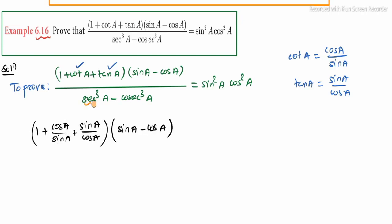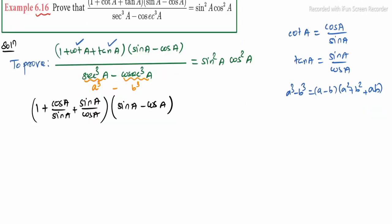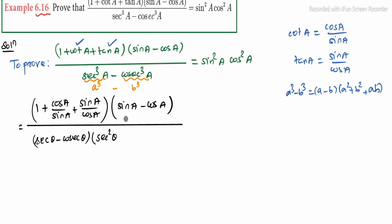Now observe the denominator. Let sec A be denoted as 'a' and cosec A as 'b'. We know a³ minus b³ equals (a minus b)(a² + b² + ab). Applying this to the denominator: (sec A minus cosec A) into (sec²A + cosec²A + sec A · cosec A).